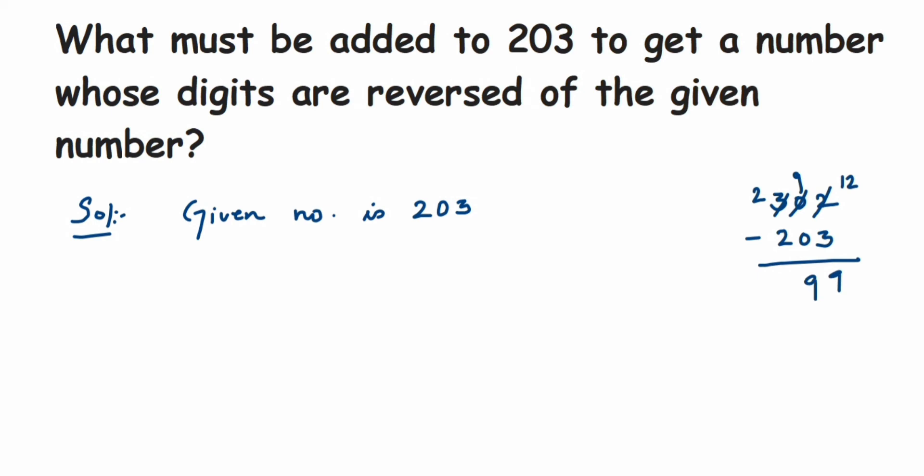203 plus 99 is equal to 302. Yes, so therefore 99 must be added.